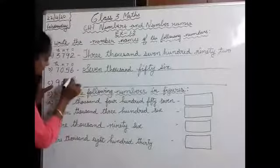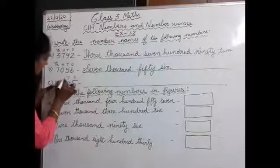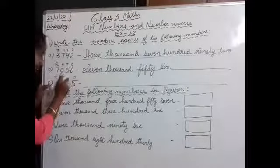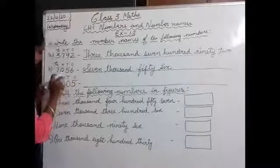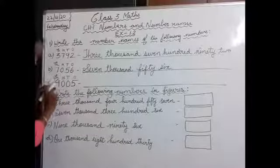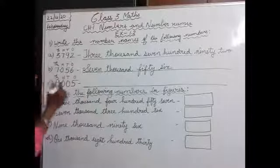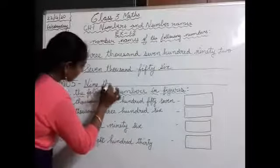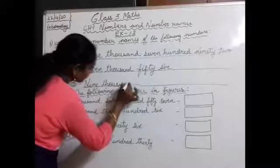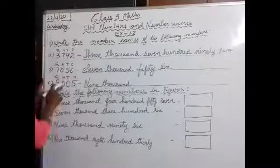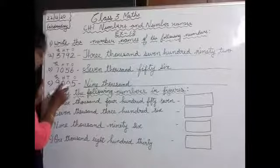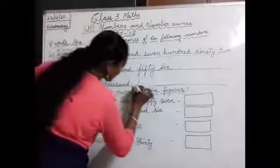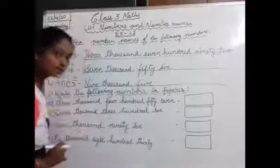First you have to write ones, tens, hundreds, thousands. In ones place we have 5. Tens place: 9. So we will write as 9000. We don't have a number in hundreds place and tens place, so we will not write anything there. Straight away we will write five. Nine thousand five.